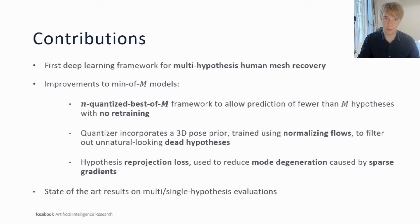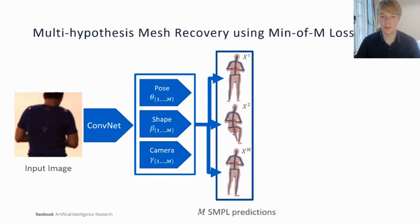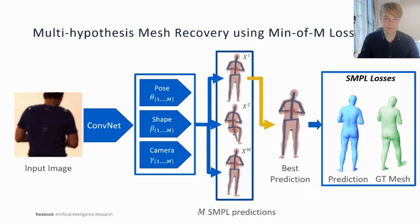This loss is applied to all hypotheses and forces them to remain consistent with the image evidence. I will now describe the method we use for tackling the problem, starting with our deep neural network architecture. We begin by encoding our ambiguous input image to generate M collections of human body model parameters. In this case, we use SMPL, which is a parametric model of human meshes. Each set of SMPL parameters then determines a 3D human mesh. We then follow a min-of-M training strategy and select the hypothesis closest to the ground truth and backpropagate error only through this prediction. By training in this manner on ambiguous images, the network naturally learns to predict a diverse set of plausible hypotheses.